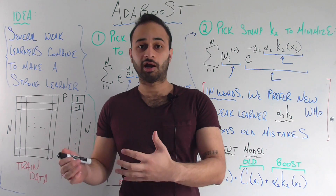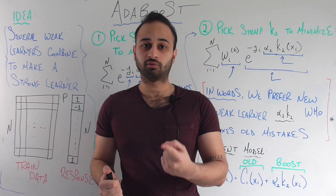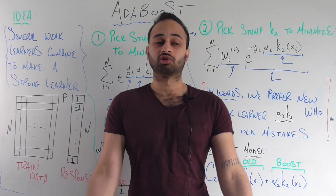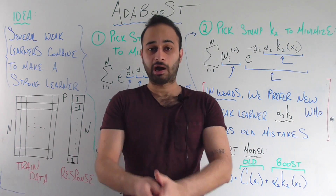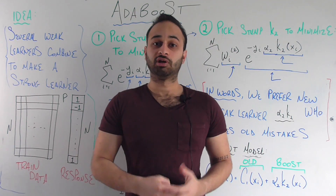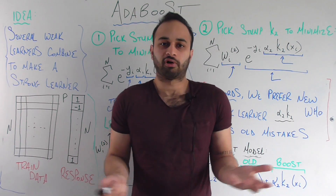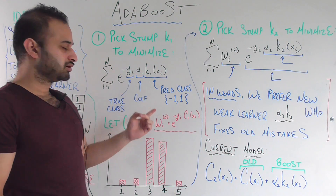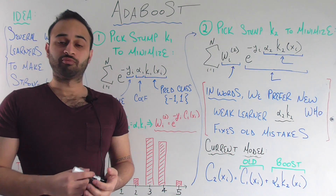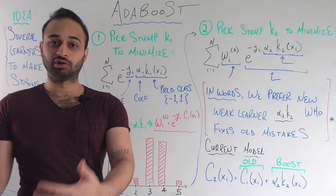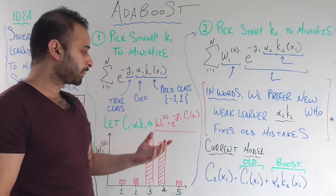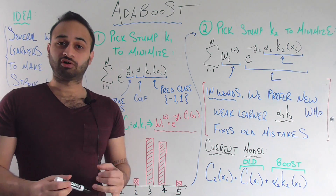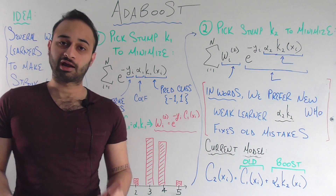So we're going to have some level of error on each of our students. Some of the students we might get correct, but at the first level we're not going to be expecting to get most of the students correct. So let's make a measure about how far away we are from the truth for each student — we're going to be using the exponential loss in order to measure how far away we are from the truth for each student after choosing the first classifier in AdaBoost.